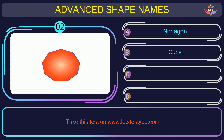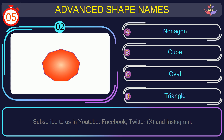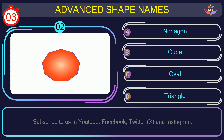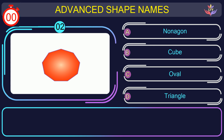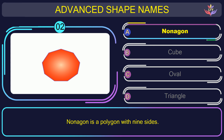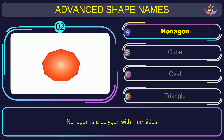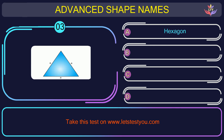Question number two. Guess the name of the shape in this picture. The correct answer is option A. Nonagon. Nonagon is a polygon with nine sides.